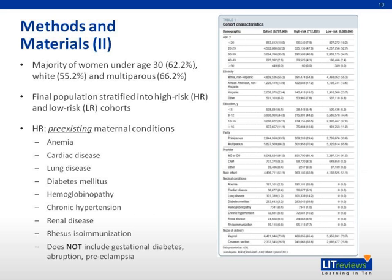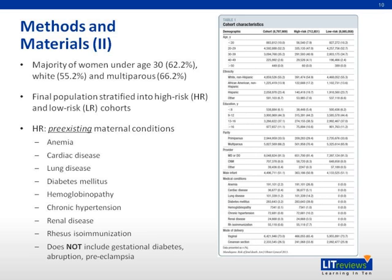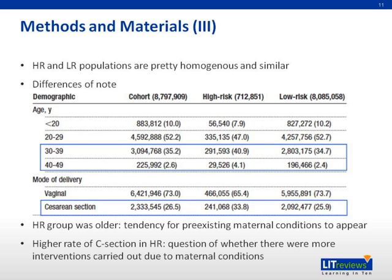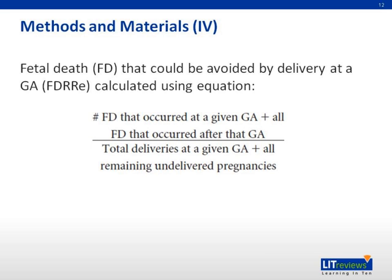The final population is stratified into high-risk and low-risk cohorts, with high risk determined by pre-existing maternal conditions as listed. This classification does not include gestational diabetes, abruption, and/or preeclampsia, which are common pregnancy complications. The high-risk and low-risk populations are fairly homogeneous; notable differences include the high-risk group being older with a tendency for pre-existing maternal conditions and a higher rate of C-section. An equation was used to calculate the number of fetal deaths that could be avoided by delivery at a particular gestational age.